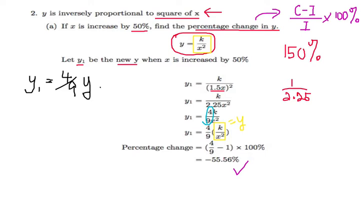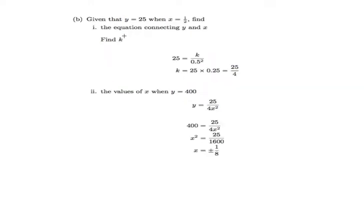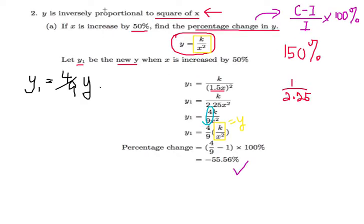Now that we know y is inversely proportional to square of x, the next question gives y equals 25 and x equals one-half, and asks you to find the equation connecting y and x. First, we have to write down the relationship: y is inversely proportional to square of x.